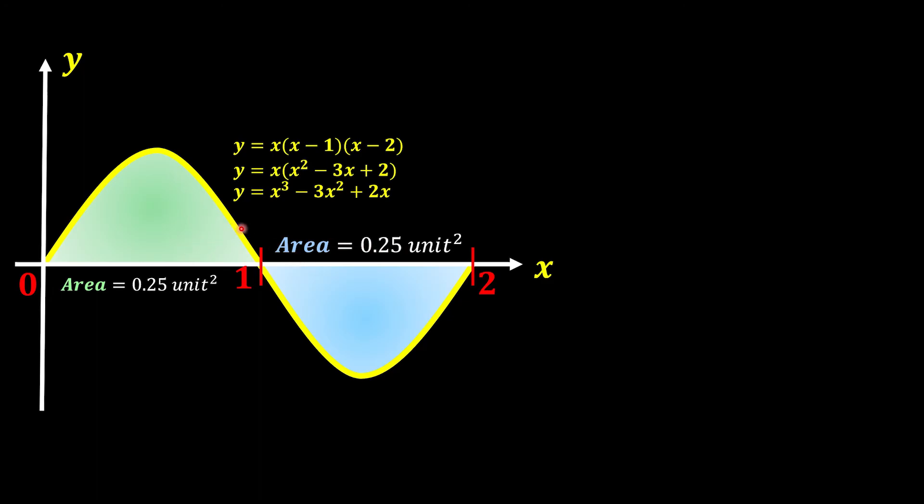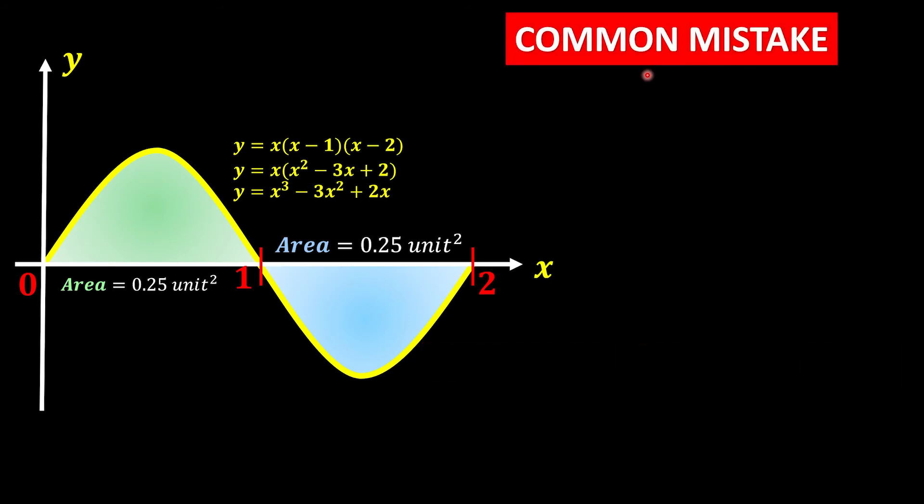So now we have the green color and the blue color. So we can say that the area under the curve from 0 to 2 is 0.25 plus 0.25 is equal to 0.5. One of the common mistakes is when we take the area of the curve from 0 to 2 straight away. We need to break it down because this one is a positive region and this one is a negative region. If we do it straight away, eventually they will cancel out each other. Let me show you.